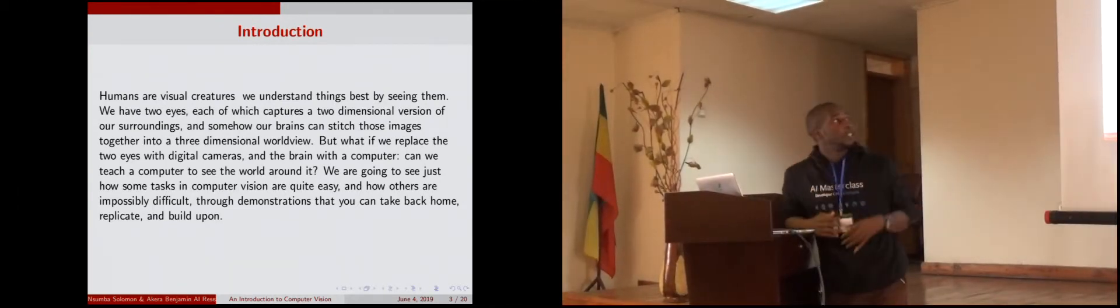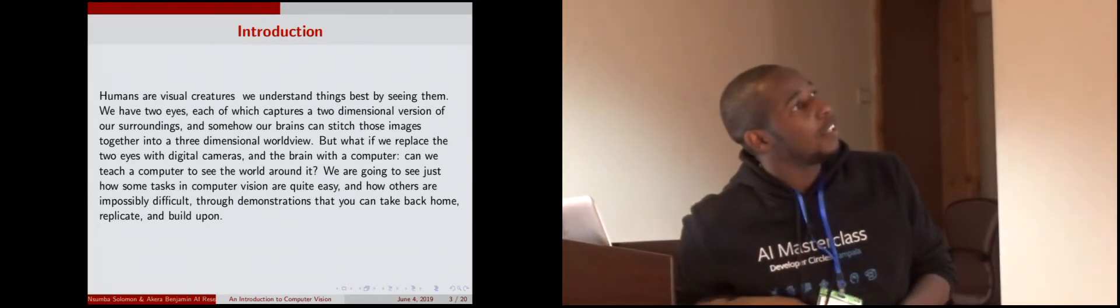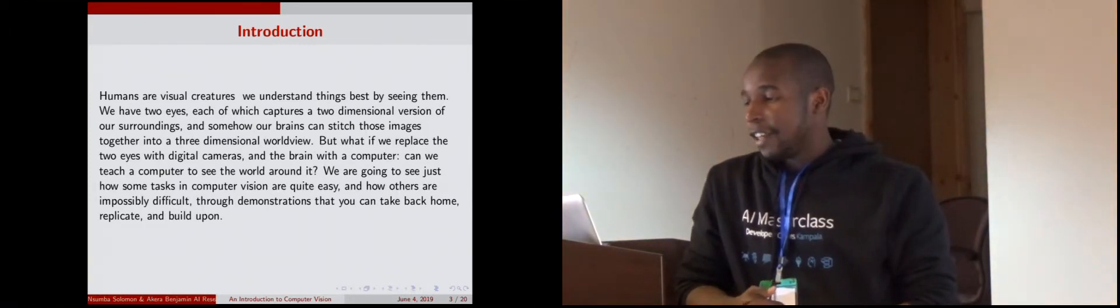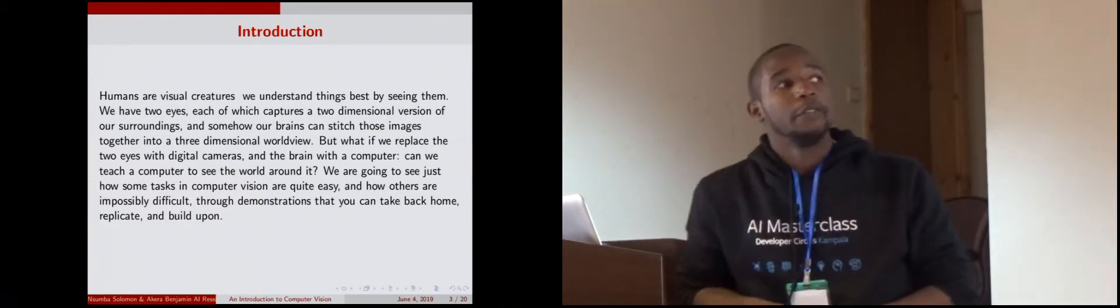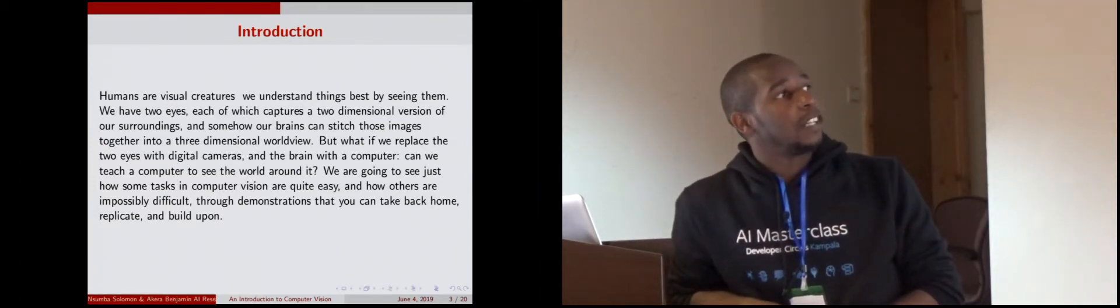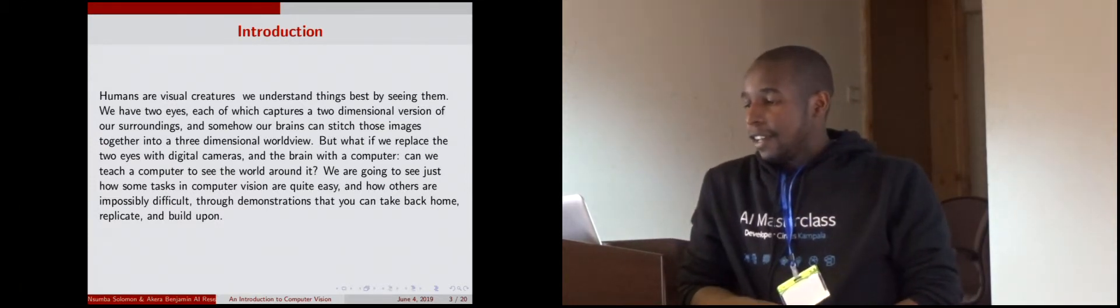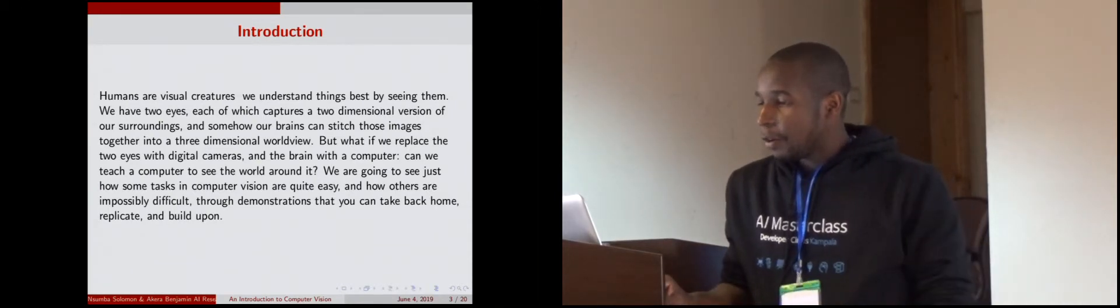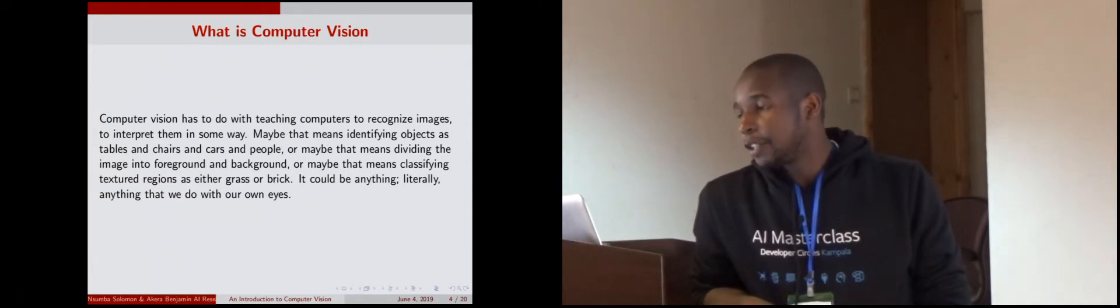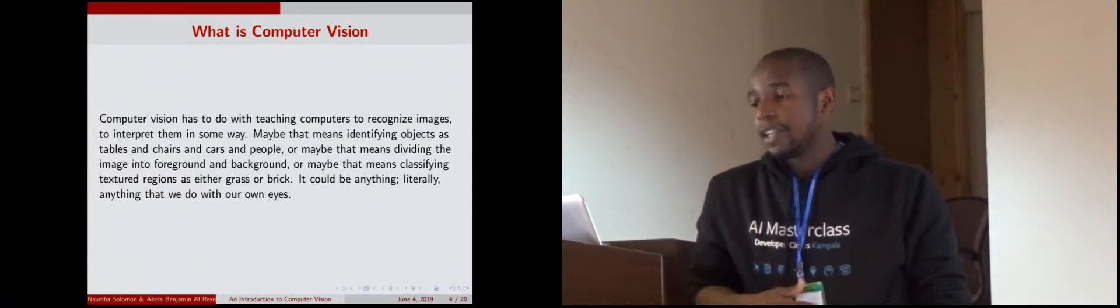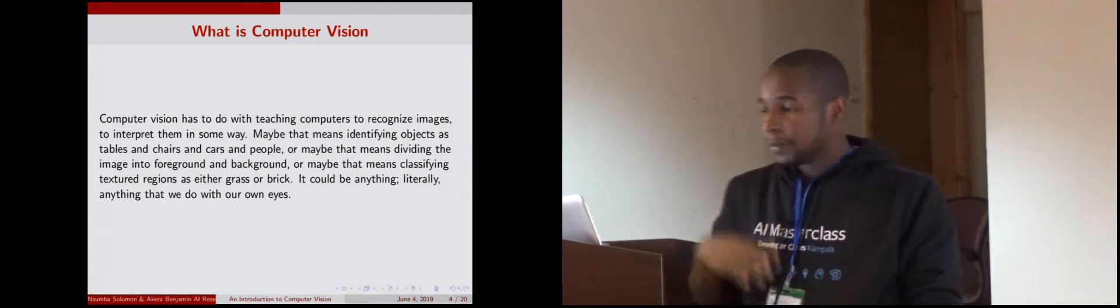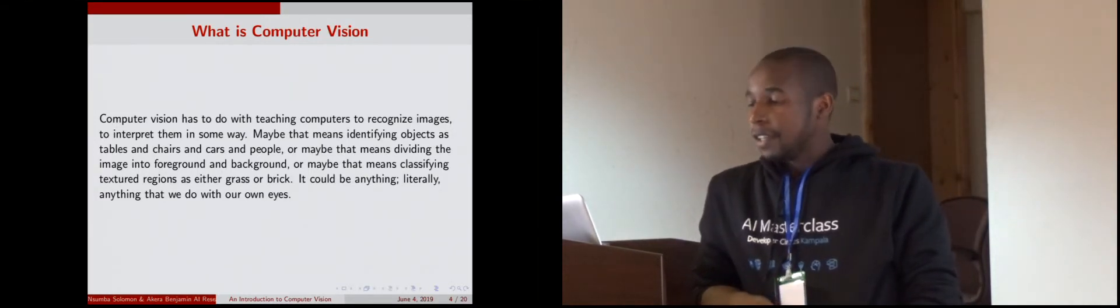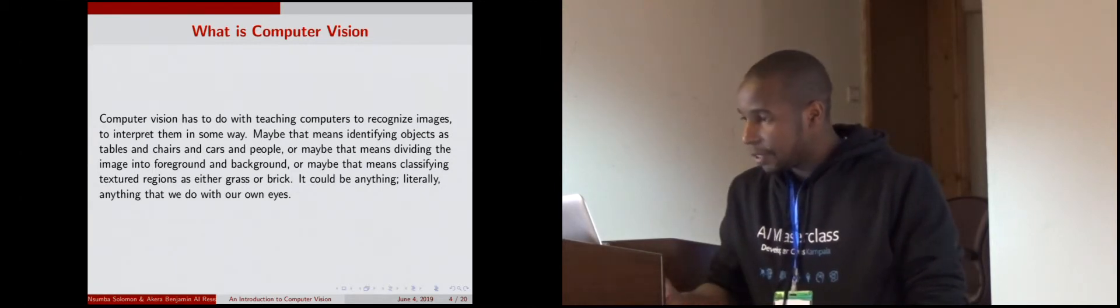As humans we see things in two dimensions. When you see an object you try to interpret it and the brain is able to give you that three-dimensional worldview of how something can be interpreted. So what computer vision tries to do is teach a computer to recognize an image and be able to interpret it in some way. This is used in so many applications that I'll talk about in a few minutes.